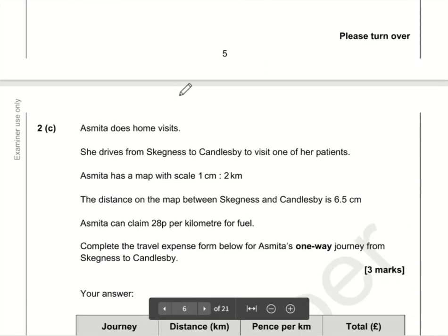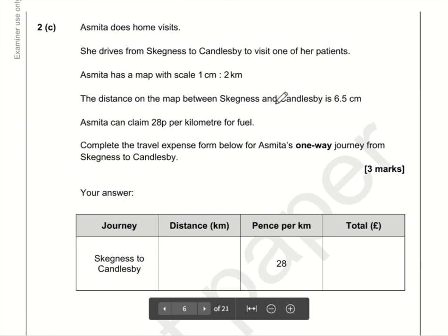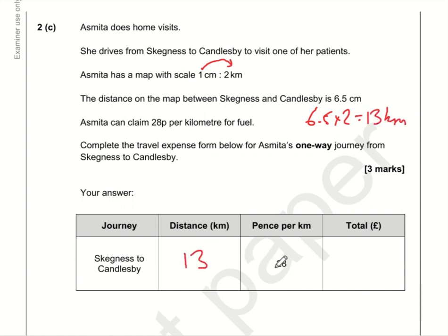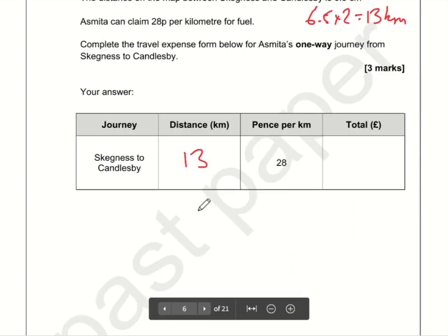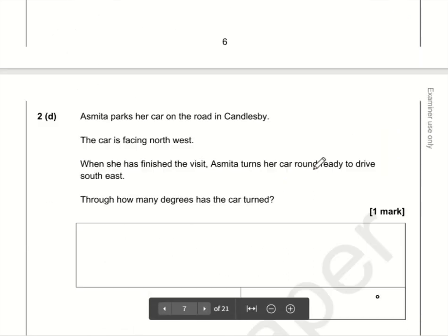For the next question, the scale is 1 centimetre to 2 kilometres, so on the map we just double the measurement. On the map it's 6.5 cm, so 6.5 times 2 is 13 — the distance is 13 kilometres. The charge is 28 pence per kilometre, so the calculation is 13 times 28, which is 364 pence. Converting to pounds, that is £3.64.